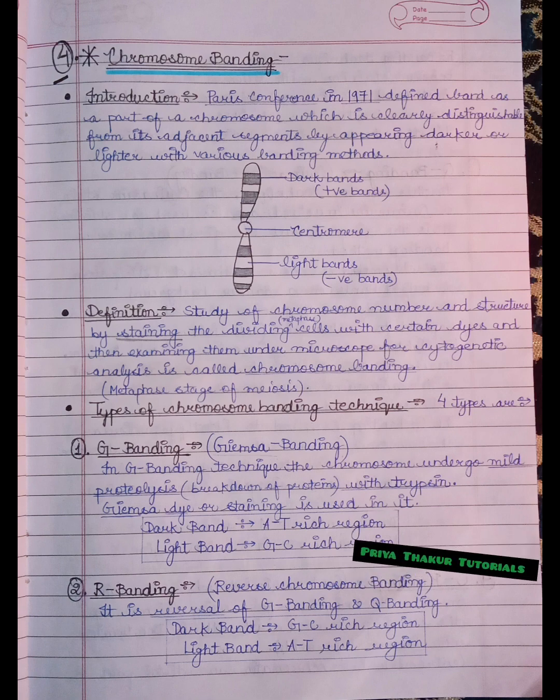There are mainly four types of chromosome banding techniques. These are G banding, R banding, Q banding, and C banding.